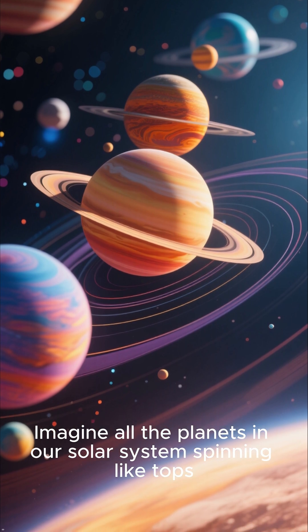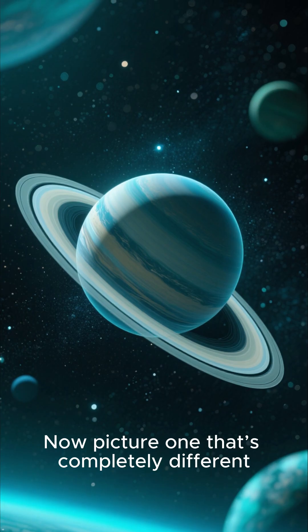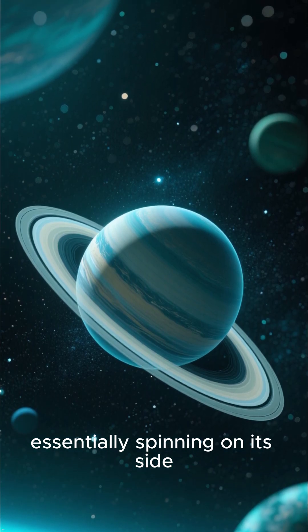Imagine all the planets in our solar system spinning like tops, upright relative to their orbits around the sun. Now picture one that's completely different, essentially spinning on its side.